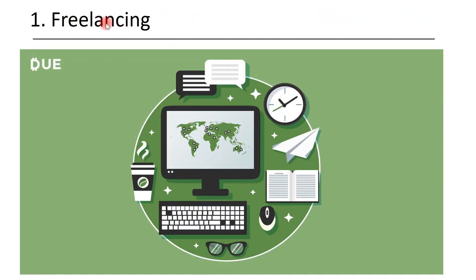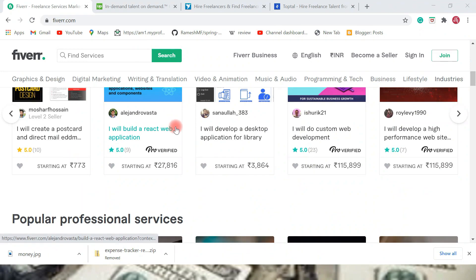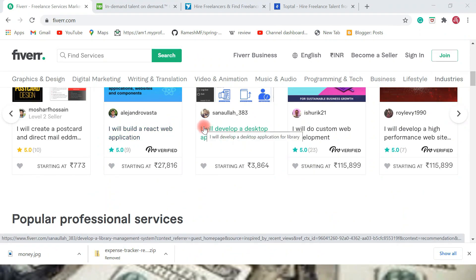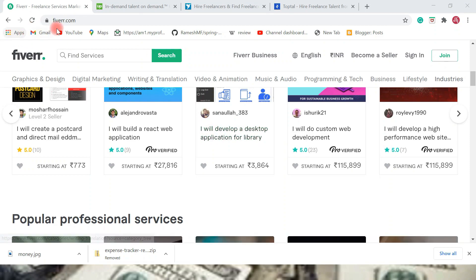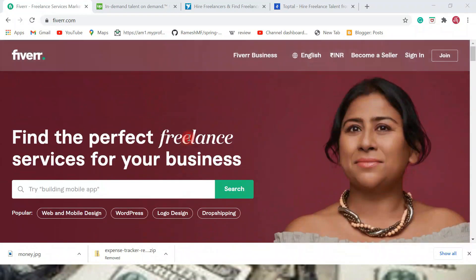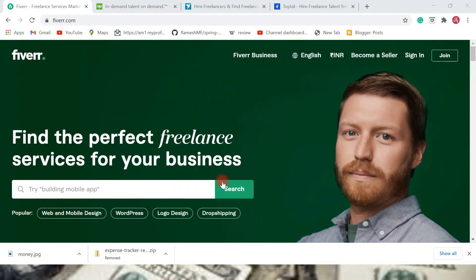The first way is freelancing. You can work as a freelancer with multiple clients. There are a lot of freelancing platforms out there — for example, Fiverr, Upwork, Freelancer, Toptal. There are a lot of freelancing websites that offer a lot of projects or work to developers. Let me show you some of the popular freelancing websites. This is fiverr.com, which is a very popular freelancing platform where you can find freelancing work.